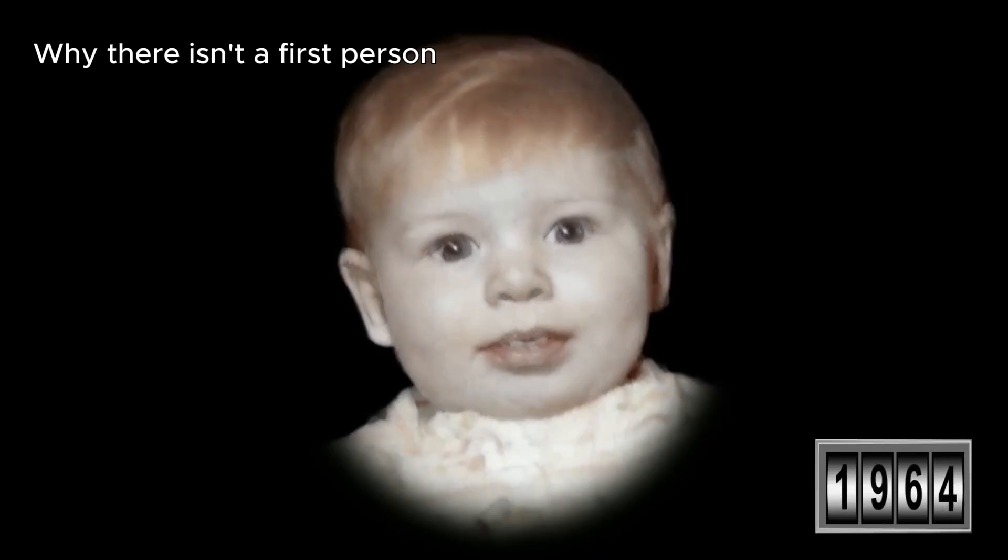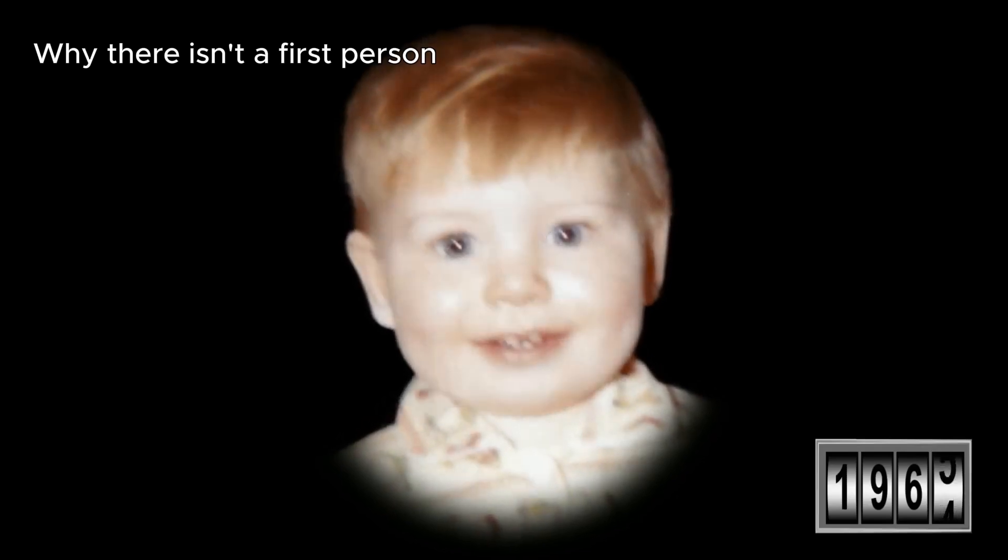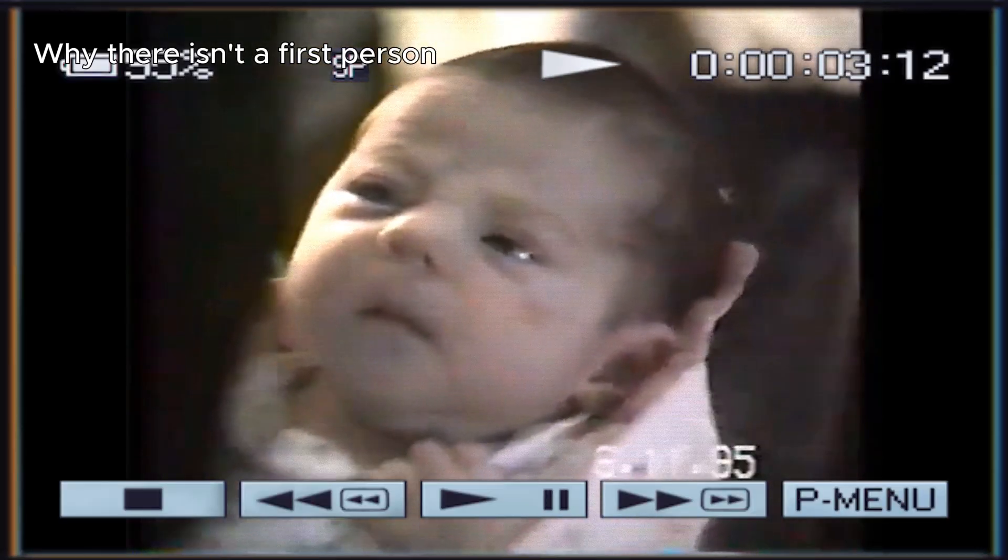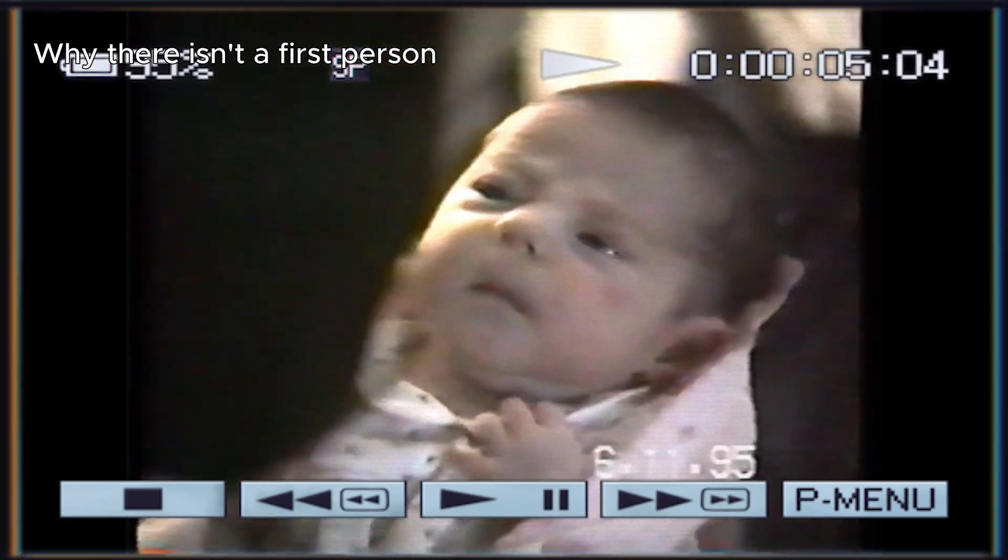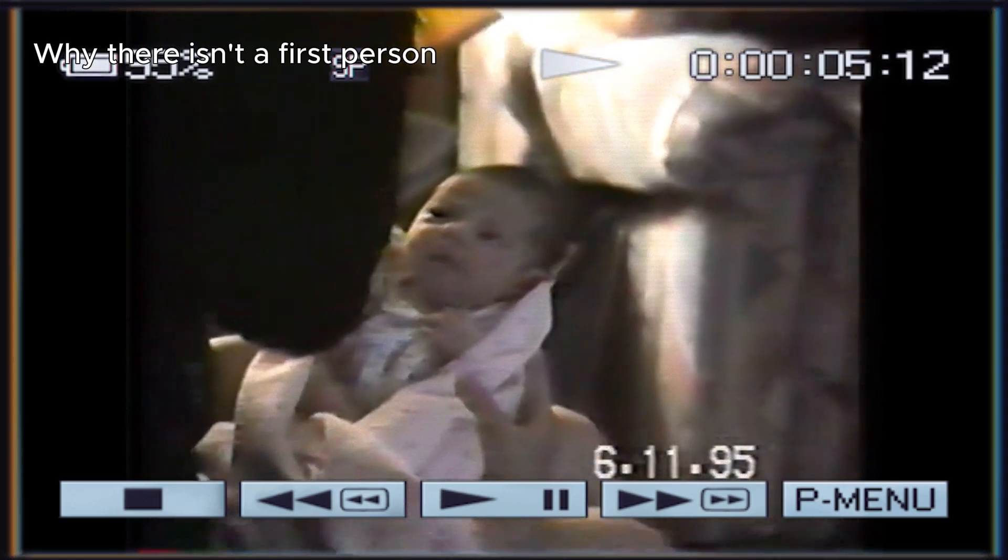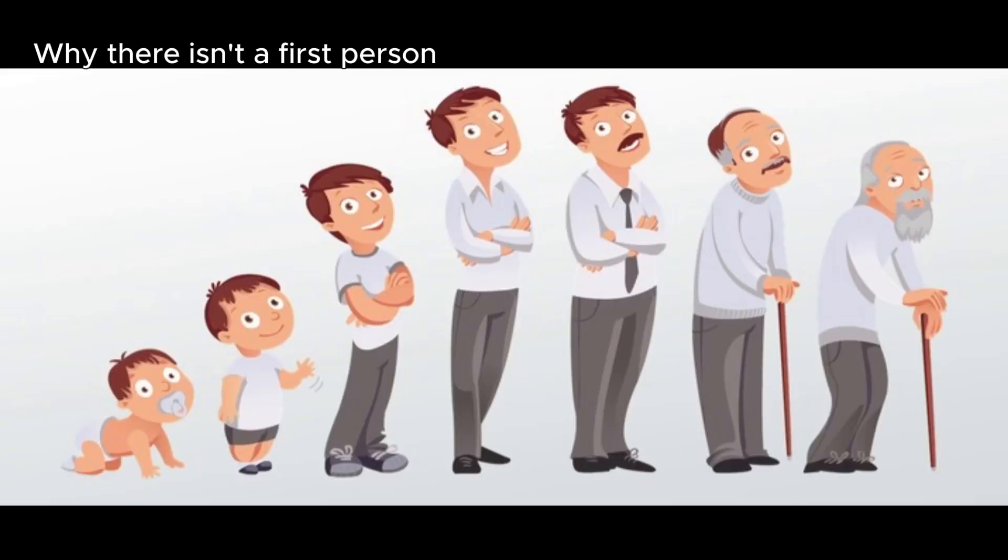Now, there was no one day that I morphed from a baby into a child. In other words, if you go back in time to a specific day when I was a baby, the day before that I was still a baby. Obviously aging is a slow and gradual process.